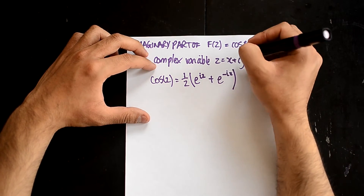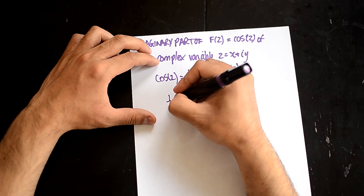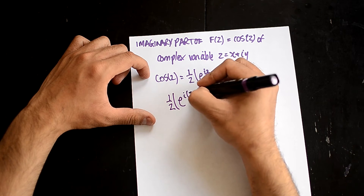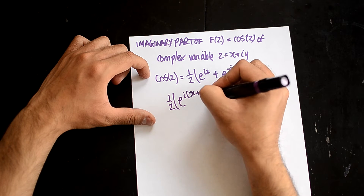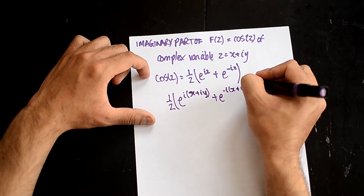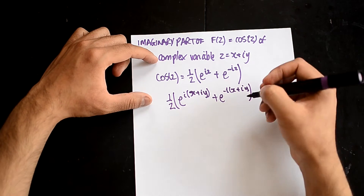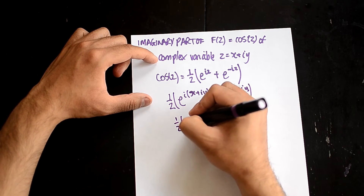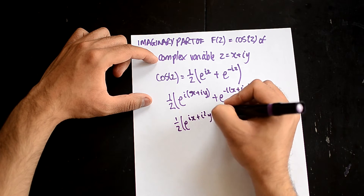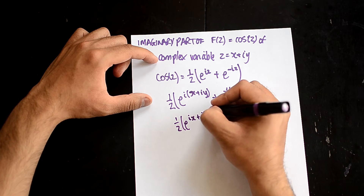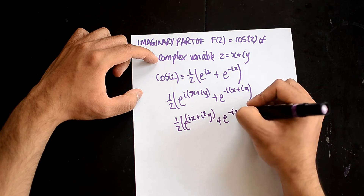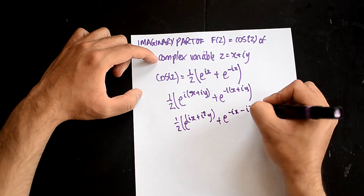Now we know that z equals x plus iy, so we can write one half of e^(i(x + iy)) plus e^(-i(x + iy)). If we expand this out, you get one half of e^(ix + i²y) plus e^(-ix - i²y).